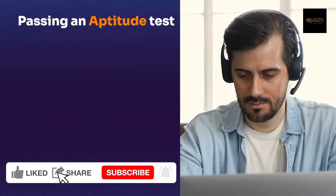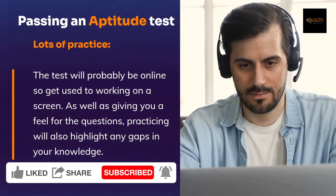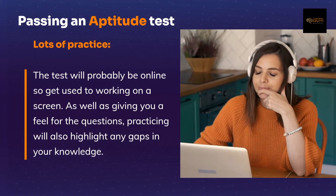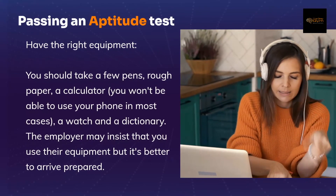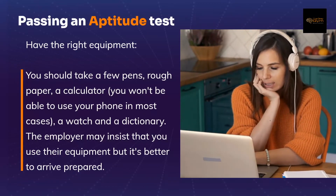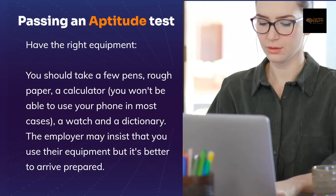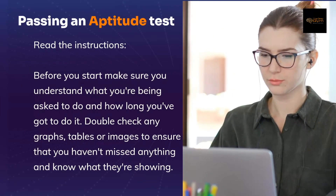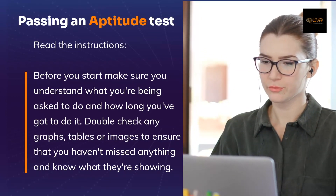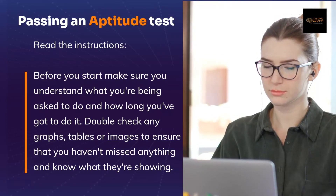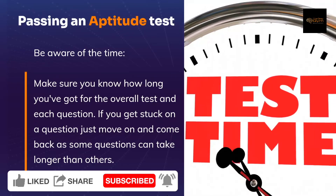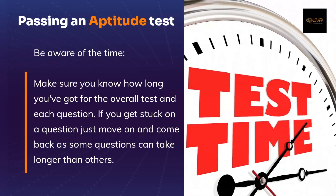Here are tips on how to pass an aptitude test. 1: Lots of Practice — the tests will probably be online, so get used to working on a screen. Practice will also highlight any gaps in your knowledge. 2: Have the Right Equipment — take a few pens, rough paper, a calculator, a watch or a dictionary. The employer may insist you use their equipment, but it's better to arrive prepared. 3: Read the Instructions and Take Your Time — before you start, make sure you understand what you are being asked to do and how long you've got. Double check any graphs, tables or images to ensure you haven't missed anything. 4: Be Aware of the Time — know how long you've got for the overall test and for each question. If you get stuck on a question, just move on and come back, as some questions can take longer than others.